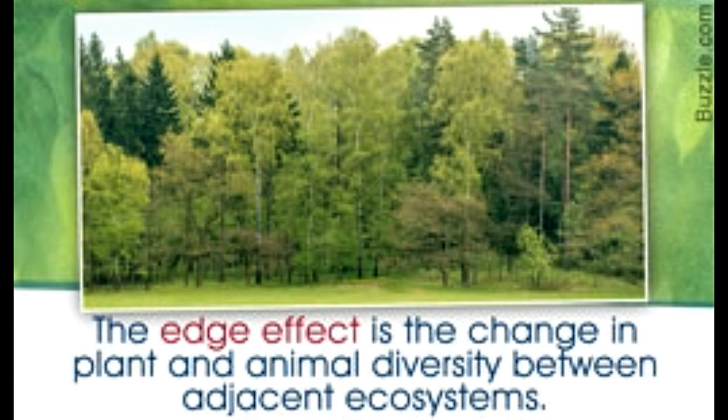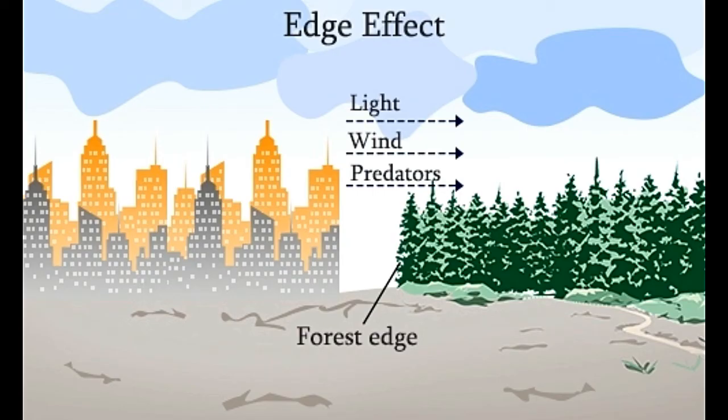But what effects does such a climatic transition have on the plants and animals found within the forest? This is described by a phenomenon called the edge effect. The term edge effect is used to describe the characteristics seen on the boundary, or edge, between two habitats or communities.